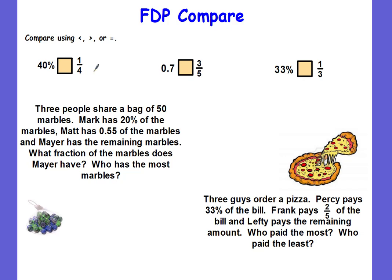For example: 40 percent versus one-fourth. Everybody should know what one-fourth is as a percent — it's one quarter out of four quarters, because four quarters make 100 cents. So one quarter is 25 cents, which is 25 percent. We have 40 percent and 25 percent — we can easily compare them. 40 percent is greater, so it's not less than, it is greater than.